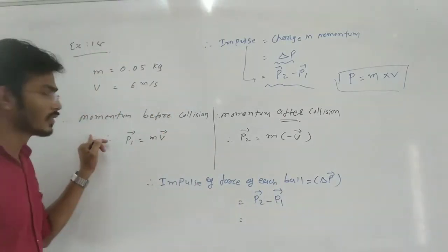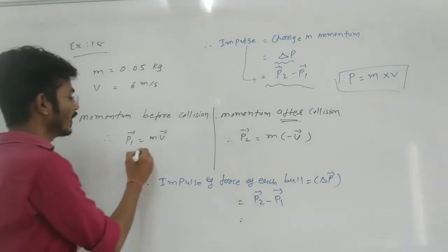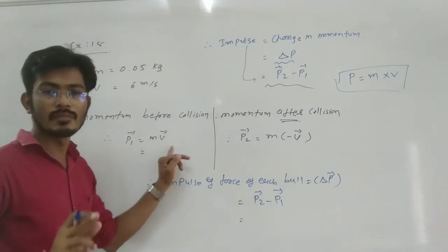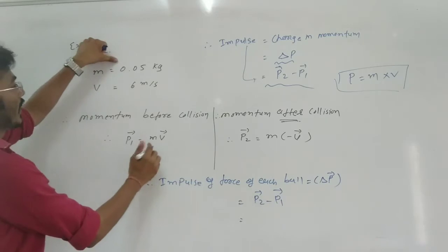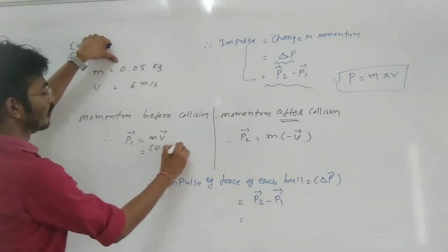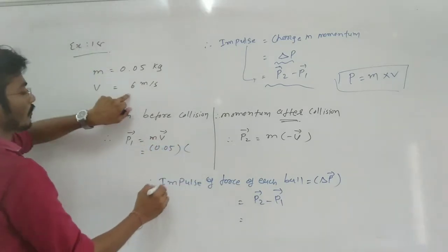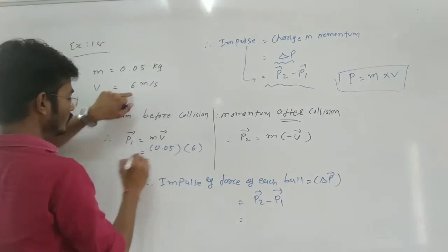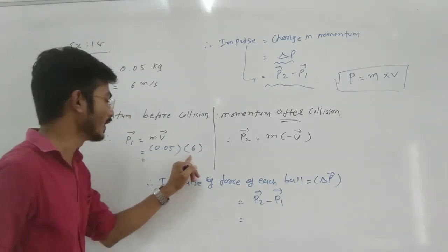So momentum before the collision. Before the collision, what we can write? p1 is equal to m multiplication v. So m value we already have, 0.05 multiplication v we already have. So 0.05 multiplication 6.